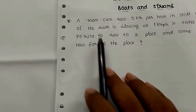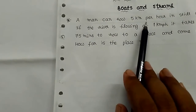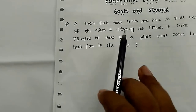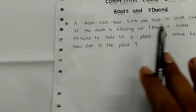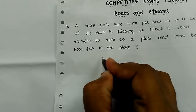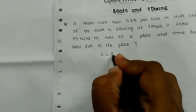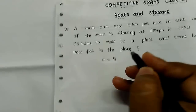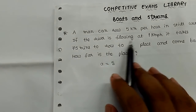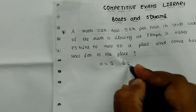A man can row 5 km per hour in still water — still water speed is 5 km per hour, that is the first data. Next change: if the river is flowing at 1 km per hour, then b is equal to 1.